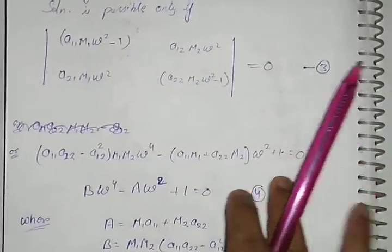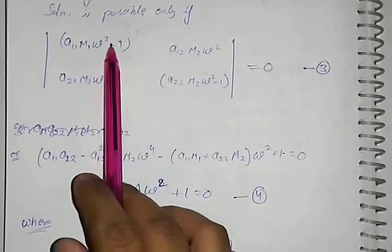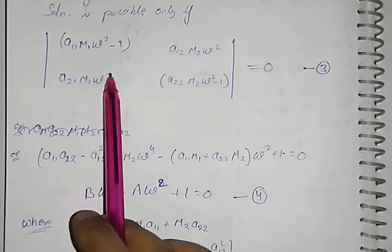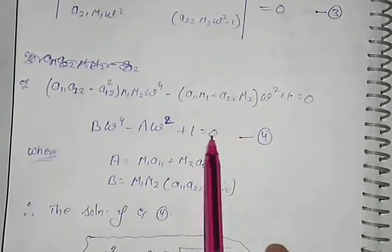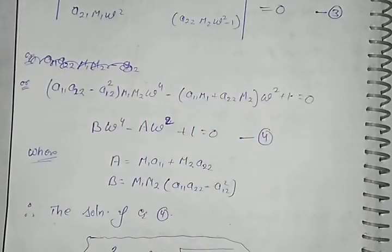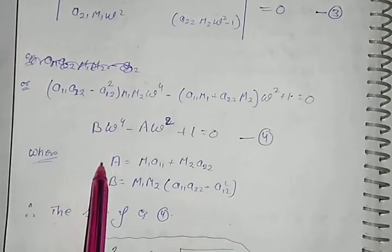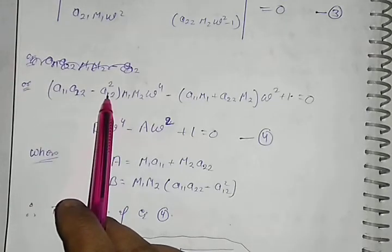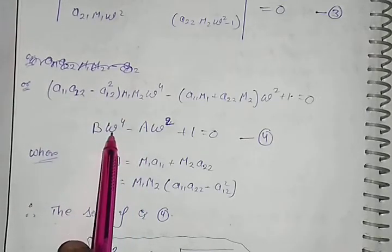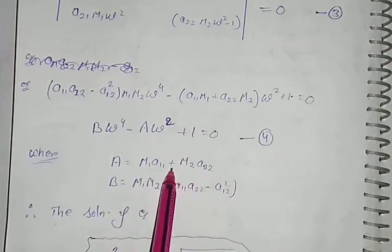When we multiply this with this and plus multiply this with this and plus multiply with this and this, we have to get this equation which is equal to 0. Let we have to consider B is equal to this. Therefore we can write B*omega^4 minus A*omega^2 + 1 = 0.